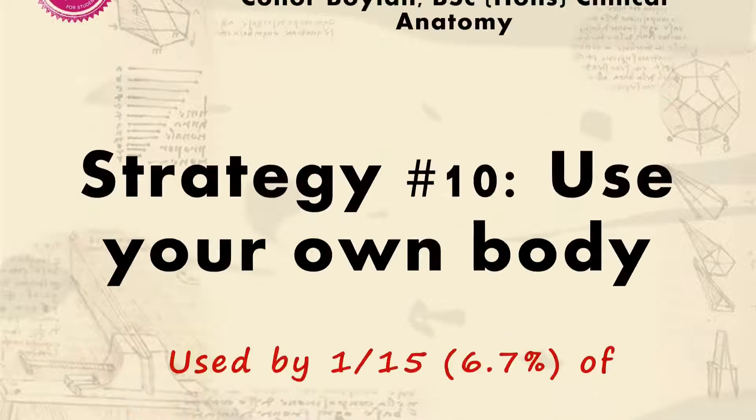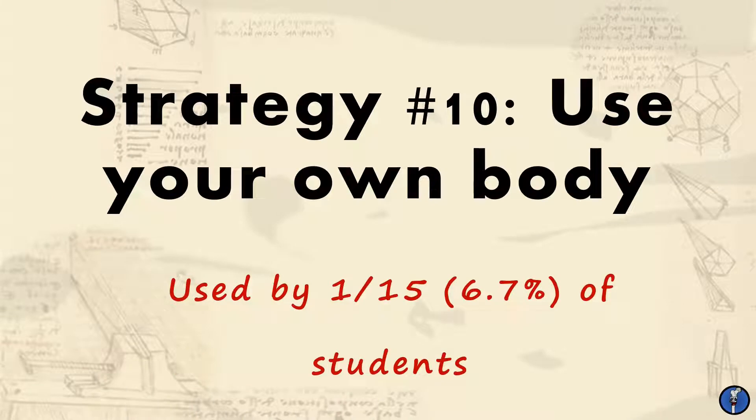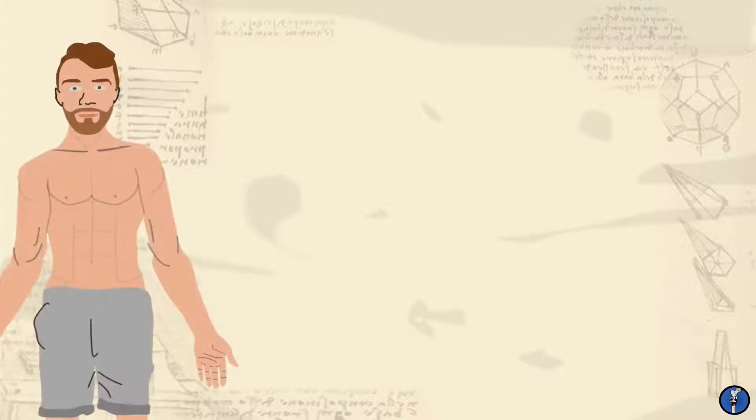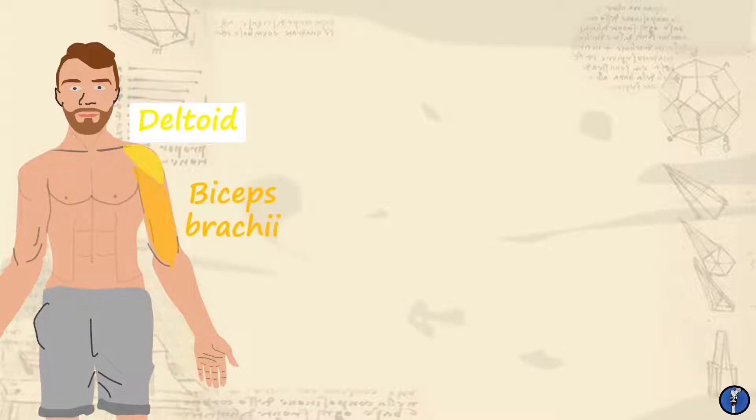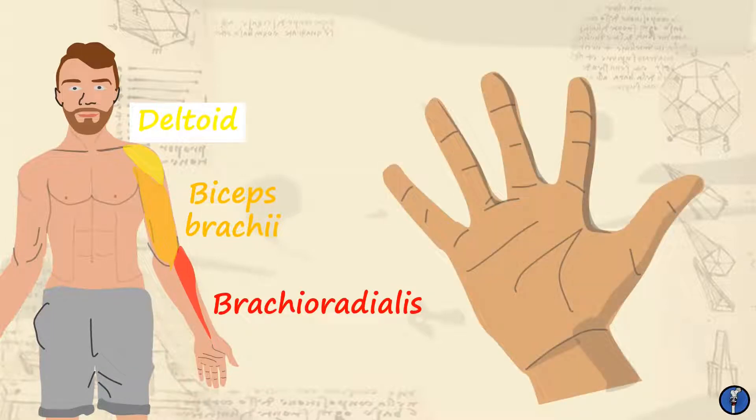The first strategy that only one of the students I talked to utilized is to draw the anatomy you're trying to learn directly onto your body. This is based on principles of kinesthetic or doing learning which has seen a lot of support in the literature. By drawing the structures directly onto yourself you're not only learning the location and regional anatomy of a structure but you're also helping to reinforce and solidify your learning by taking it from the textbook and applying it to a new context.